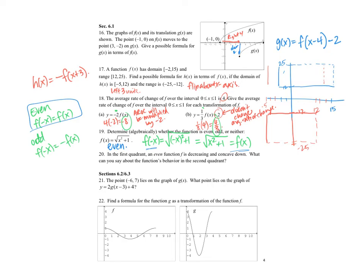Okay, in the first quadrant an even function f is decreasing and concave down. What can you say about the function's behavior in the second quadrant? So if we're over here, I know it's decreasing and concave down, so it's doing like that. And so if it's even, that means it is reflected about the y-axis, so it has this reflective symmetry. So if we reflect it about the y-axis, it's doing that. So we can say it's increasing and concave down.